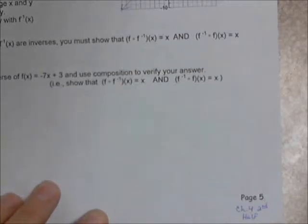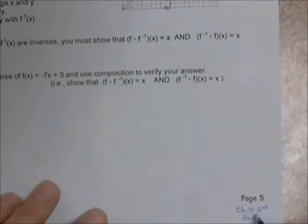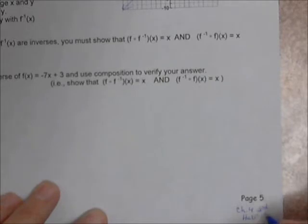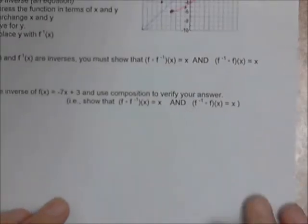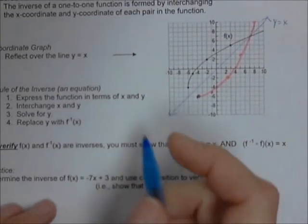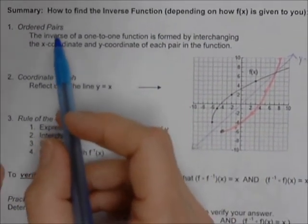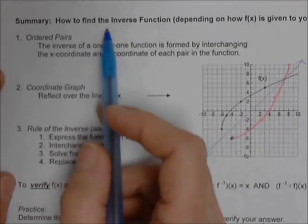We're going to complete the chapter 4 packet of notes — chapter 4, second half. Remember you had two packets of chapter 4 notes. The first half we completed already. The second half, we have a couple of things left to do on pages 5 and 6. Grab your chapter 4 second half notes, turn to page 5, and we'll continue talking about how to find inverse functions.